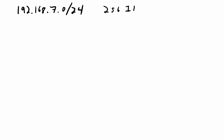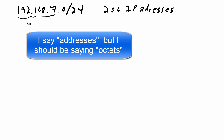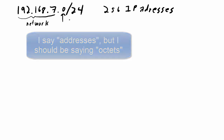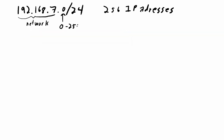Let's start with a slightly easier case using the same network — 192.168.7.0/24 — which has 256 IP addresses associated with it. That will be IP addresses 192.168.7.0 up to 192.168.7.255. The first three octets define the network part, and the last octet can range from zero up to 255 to define the full network.